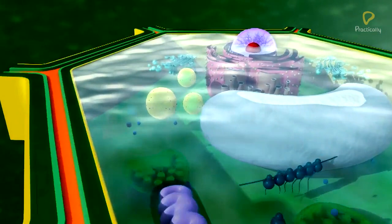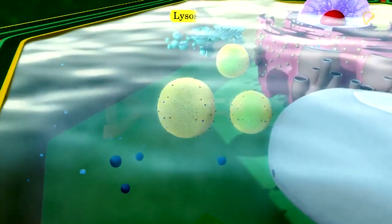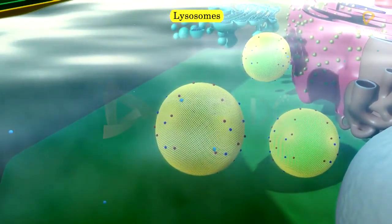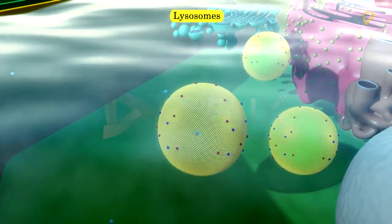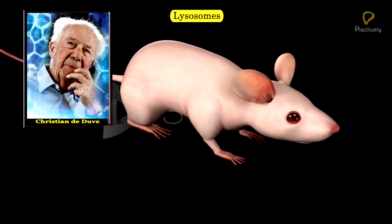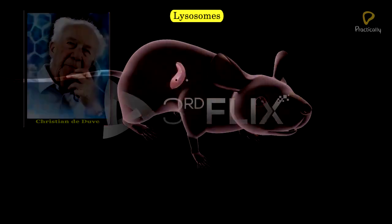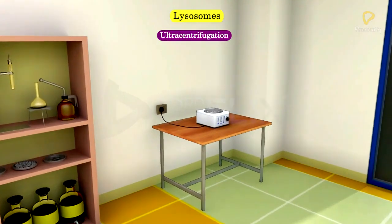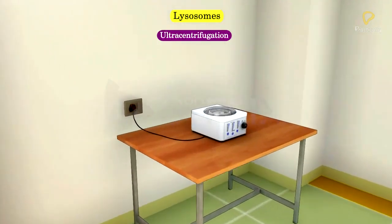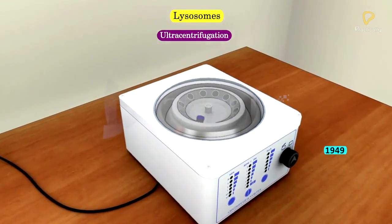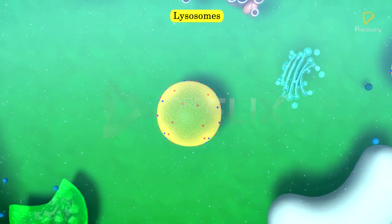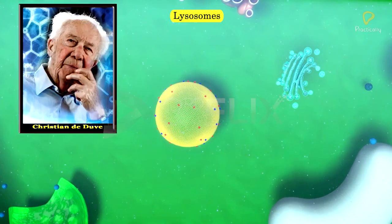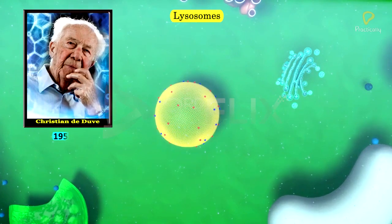The objective is to study about lysosomes. Lysosomes were first discovered by Christian de Duve in the liver cells of rat by ultracentrifugation in the year 1949. The term lysosome was introduced by Christian de Duve in 1955.